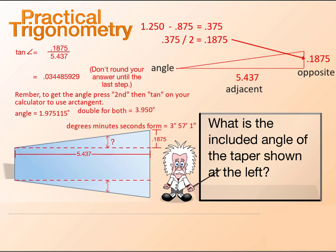We need to add both angles together. So, double the answer to get 3.950 degrees or 3 degrees 57 minutes 1 second.